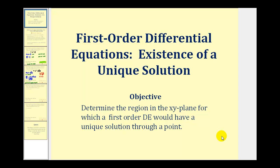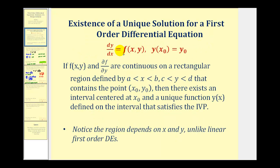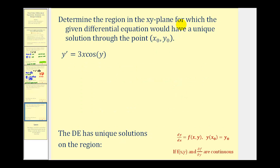Welcome back for two more examples of determining the region in the xy plane for which a first order differential equation would have a unique solution through a point. When we have a first order differential equation in standard form and given a point by the initial condition, if f(x,y) and the partial derivative of f with respect to y are continuous on a rectangular region containing that point, then there exists an interval centered at x₀ and a unique function y(x) defined on that interval satisfying the initial value problem. Our main goal is to find where f and the partial derivative of f with respect to y are continuous on the xy plane.